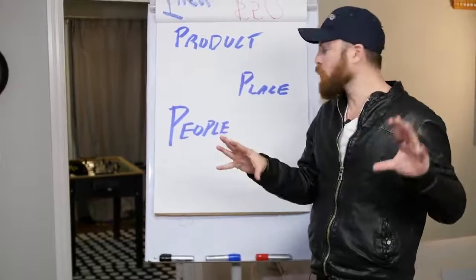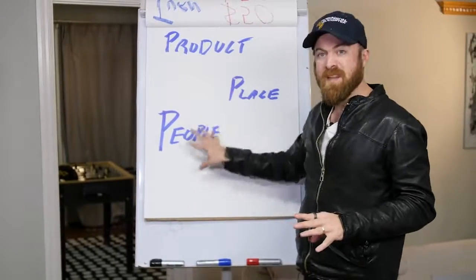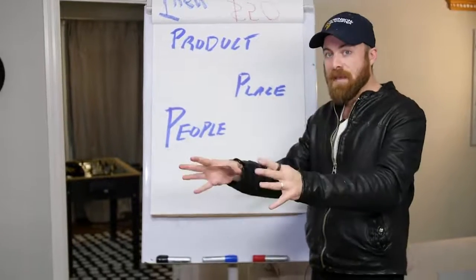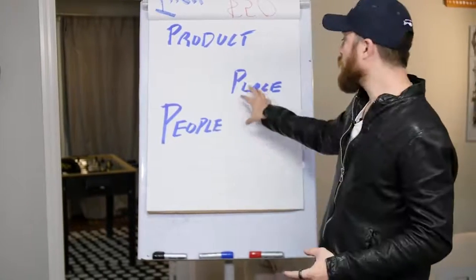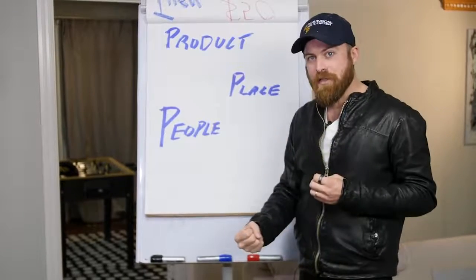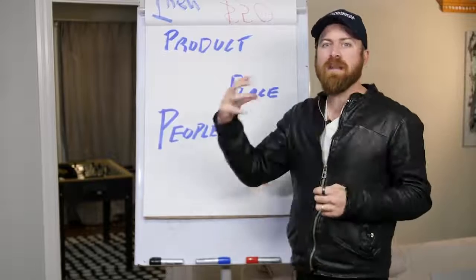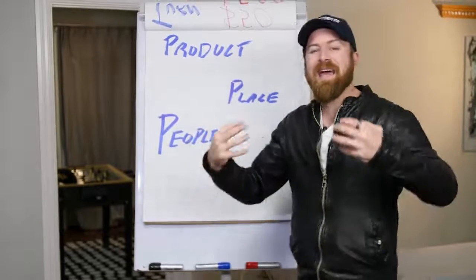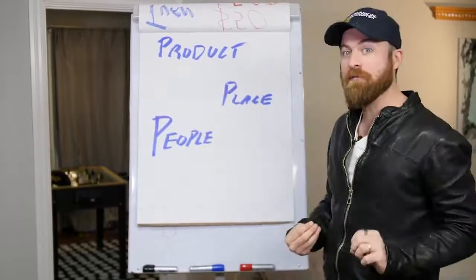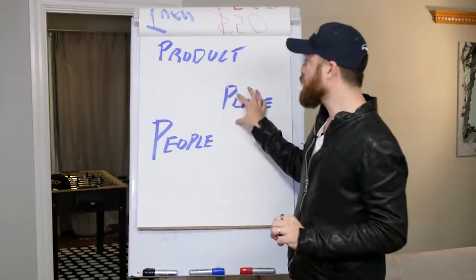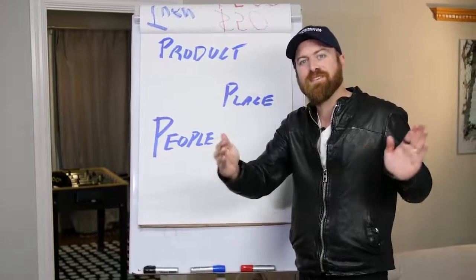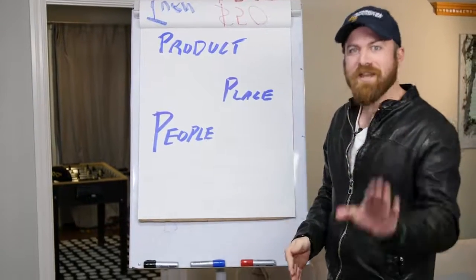There are three steps. You need to reach people — we're going to use Google Ads for that. Then we need a place, a website, where we can sell them. And we need a product that pays us commissions when it's sold, which will be an affiliate offer. We're going over this whole three-step system in this video.